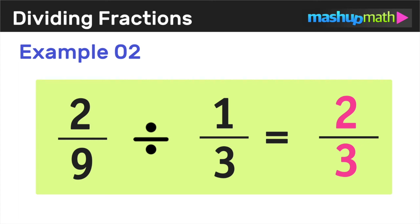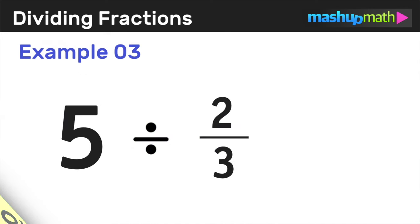So now let's go ahead and take a look at one more example. So in this last example, we need to find the value of 5 divided by 2 over 3. Now I'm sure that you've noticed that the number 5 is not a fraction. So how is this problem different? And how can we use keep, change, flip to solve it?